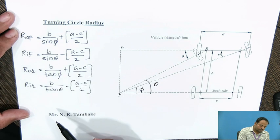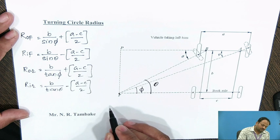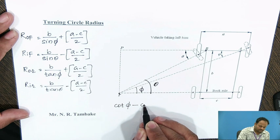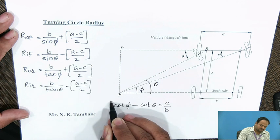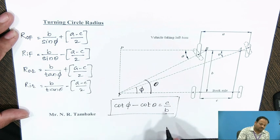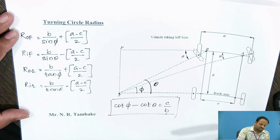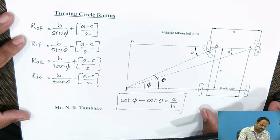From these four formulas, we can calculate the four different turning circle radii for different wheels. For correct steering, the equation cot phi minus cot theta equals C by B must be satisfied by our steering mechanism. If our steering system satisfies this equation, then we can call our steering correct, and all the wheels are rolling perfectly.